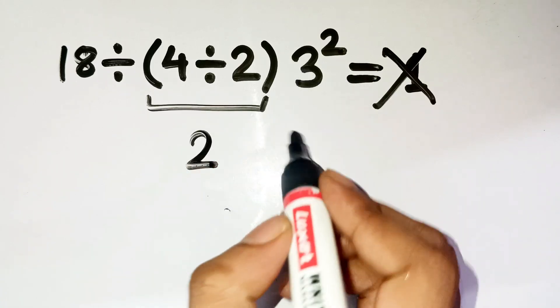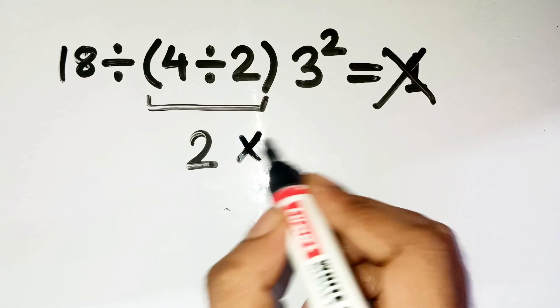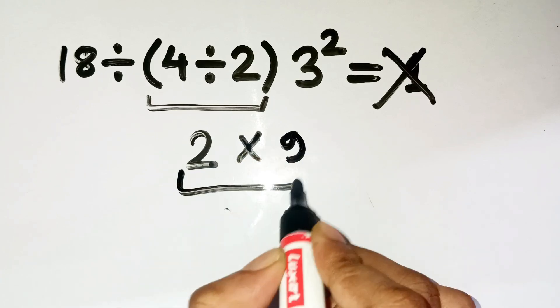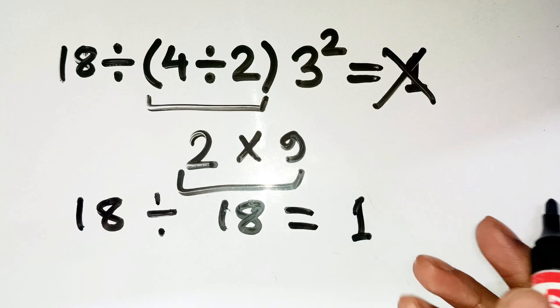And on the right side, 3 squared is 9. Then they multiply those two numbers together. 2 times 9 is 18. And finally, 18 divided by 18 gives 1. Seems perfect, right?